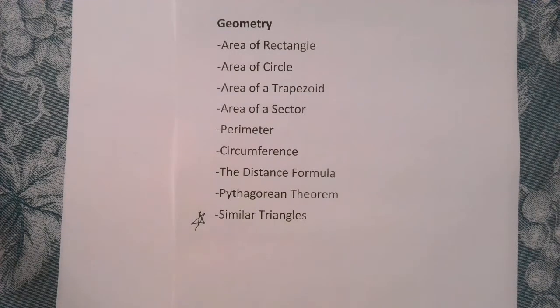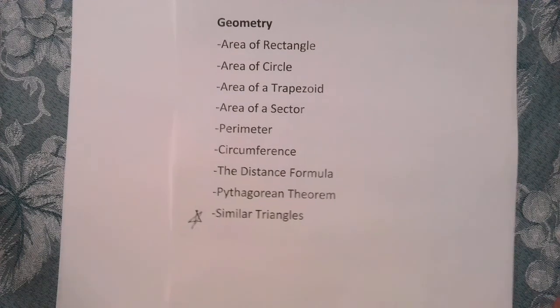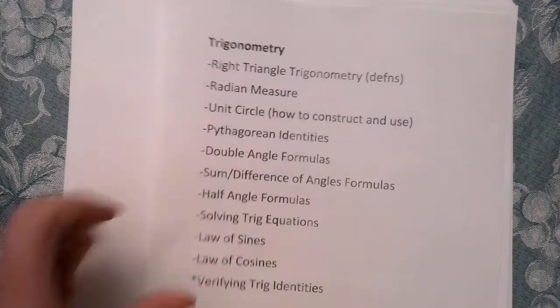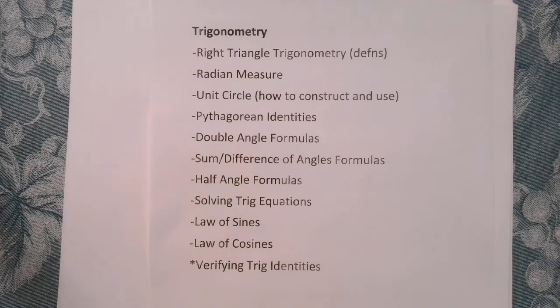Okay, next, let's talk about trigonometry. What do we need to know from the realm of trig? So, of course, in terms of right triangle trigonometry, we need to know how to define the six trig functions, sine, cosine, tangent, secant, cosecant, cotangent. You should be very comfortable with radian measure. That's hugely important. You should know how to construct the unit circle, how to use the unit circle. So not just memorize, but understand the structure of the unit circle. That's important.